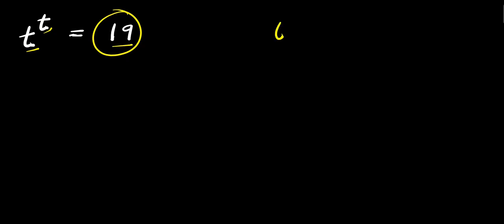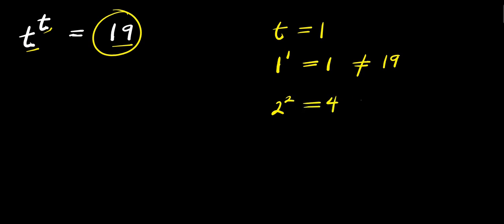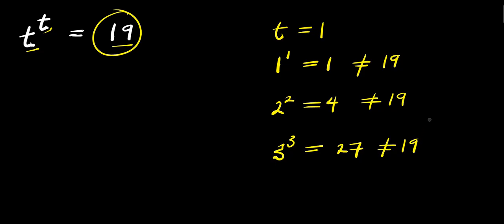So for instance, if you consider t equals 1, that means you will have 1 to the power 1 and this is 1, so this is not 19. If you consider 2, you have 2 to the power 2, this is 4, and this is not 19. If you consider t equals 3, you are going to have 3 to the power of 3 and this is 27, and this is not 19.